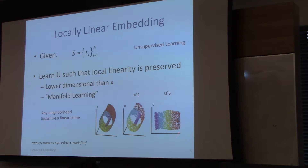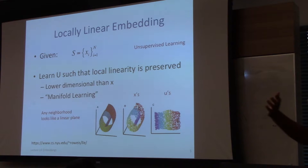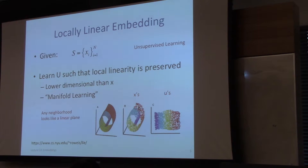What does local linearity mean? Take a local neighborhood centered around one of the data points — it's locally linear. Things to your left and right, arranged on this manifold, remain in those relative positions. We want to map that to a two-dimensional representation of this surface that preserves that local linearity property — the relative configurations of your neighbors are preserved in the two-dimensional representation.